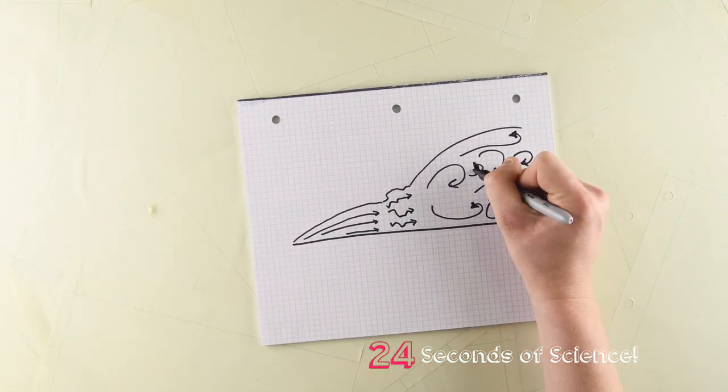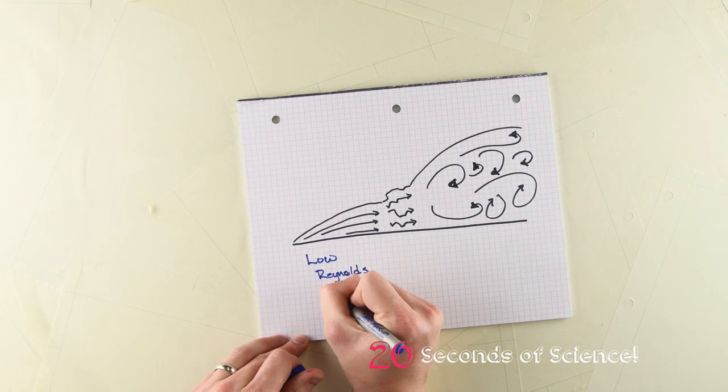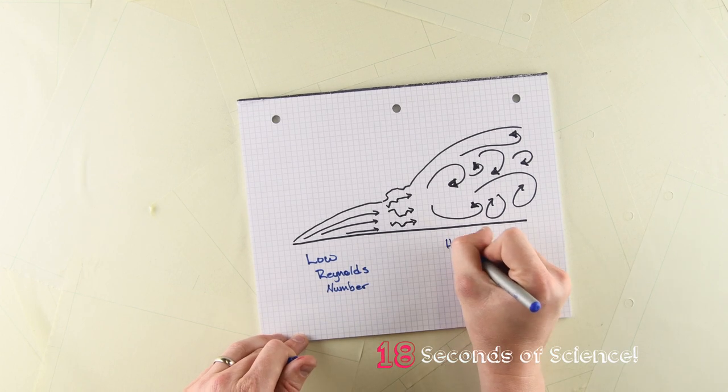If the Reynolds number is very high, it means that the momentum is so large that the fluid viscosity can't balance it, and the structure of the fluid breaks down, causing it to mix.